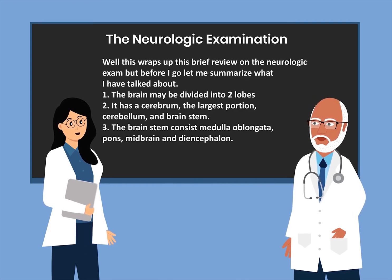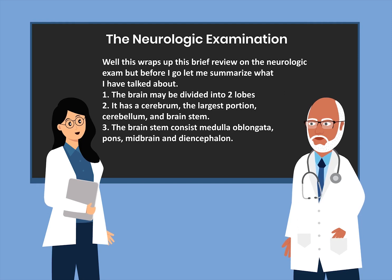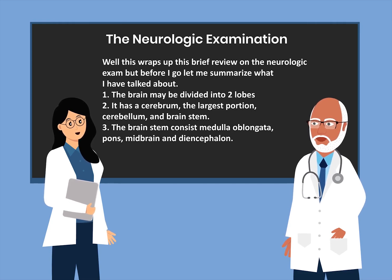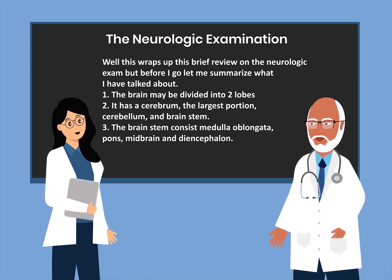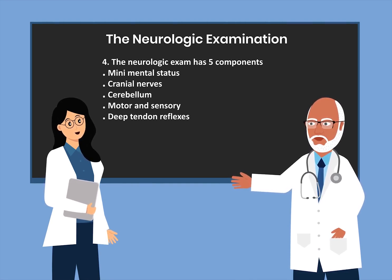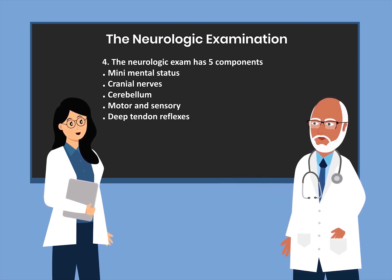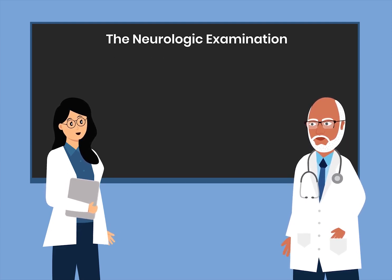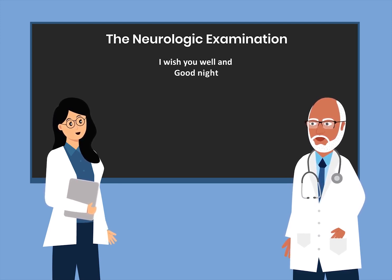This wraps up the brief overview of the neurologic exam. To summarize: the brain can be divided into the cerebrum, which is the largest portion, the cerebellum, and the brainstem. The brainstem consists of the medulla oblongata, the pons, the midbrain, and the diencephalon. The neurologic exam has five components: the mini mental status, the cranial nerves, the cerebellum, the motor and sensory, and the deep tendon reflexes. I hope this short presentation has provided a framework within which you will build your own structure of information and knowledge. I wish you well.